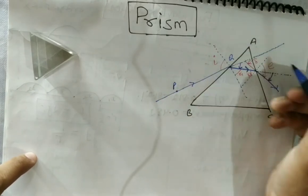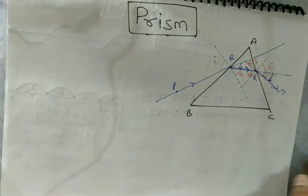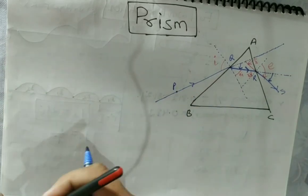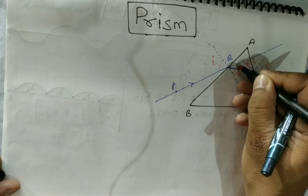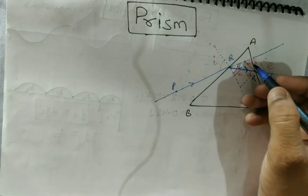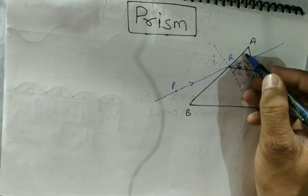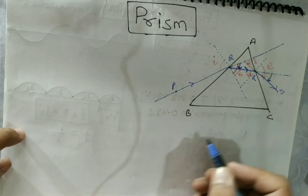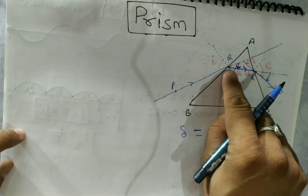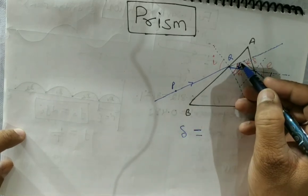Let us name the ray P, Q, R and S. You can see the deviation produced — if this angle is i, then by alternate interior angles, this angle must also be i. The deviation produced by surface AB is only this portion: the deviation at surface AB is i minus r1.